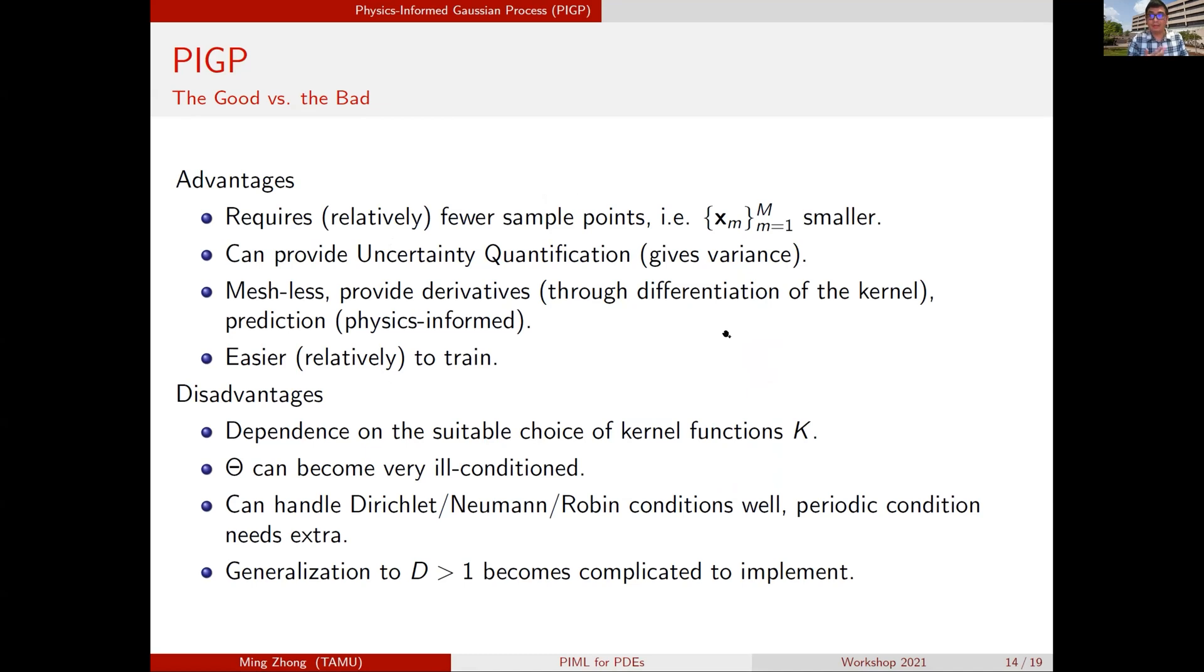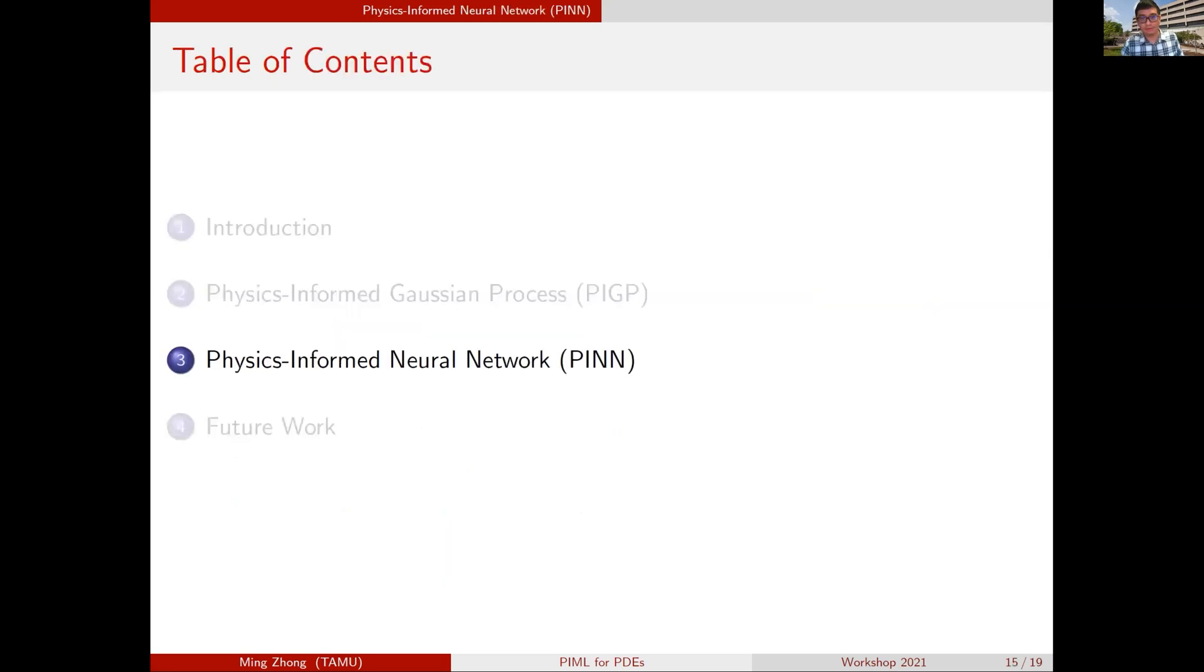Those are the examples we tried our Gaussian process on. The Gaussian process is really powerful as it requires fewer collocation points as compared to neural network methods, and it can give you the variance so you can do uncertainty quantification. It's meshless. You can provide your derivative - you just differentiate the kernel, so you get the derivative of the solutions. It's somehow kind of easier to tune if you pick the right kernel. That brings up the disadvantages. If you choose a wrong kernel, basically, no matter how you tune up the points, the method will never converge. It's highly dependent on the kernel. The resulting kernel matrix is big and can become really ill-conditioned as you assemble more points. It can handle Dirichlet, Neumann, and Robin conditions really well, but to handle periodic conditions, you need an extra setup in the algorithm. It will take a lot more time and extra pieces of code to generalize it to a system of PDEs. We're still working on that.